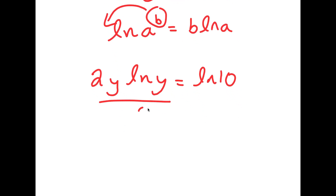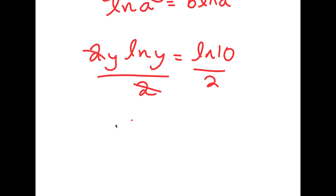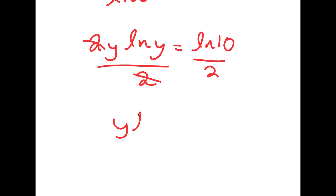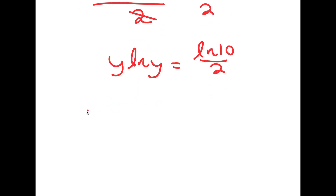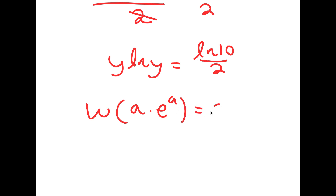Now, if I divide both sides by 2, I get y times ln y is equal to ln 10 over 2. Now, if I take the Lambert W function of something in the form a times e to the power of a, this is simply equal to a.